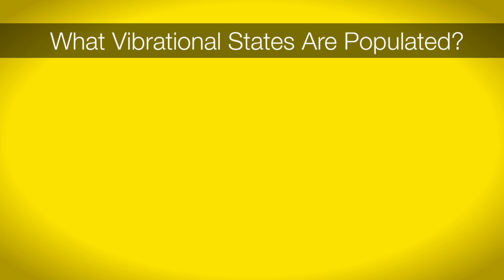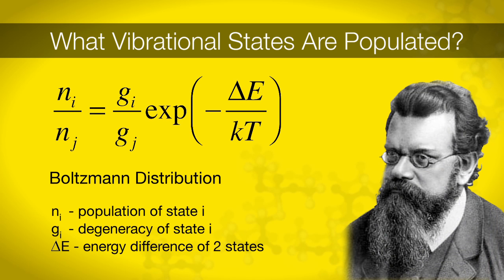The intensity of the transition in our spectrum gives us information on the population of states. We will explore this in more detail in an upcoming experiment, but there are a few general ideas you should be aware of. The population of energy states occupied in a macroscopic sample is described by the Boltzmann distribution, shown here. In this equation, Ni is the population of state i, Gi is the degeneracy of state i, delta E is the energy difference between the two states, k is Boltzmann's constant, and T is the temperature of the sample.